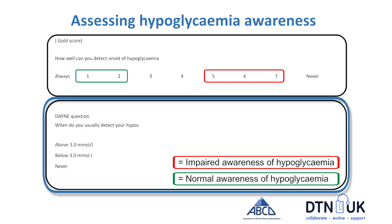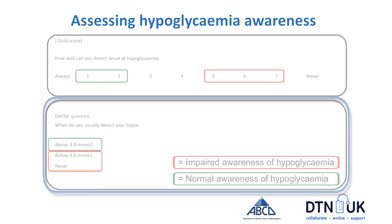Similarly, the Daphne program asks a very simple question: when do you detect your hypos? If you detect it above three, you've got intact awareness. But if you usually detect your hypoglycemia below three, or never, then you've got impaired awareness of hypoglycemia.